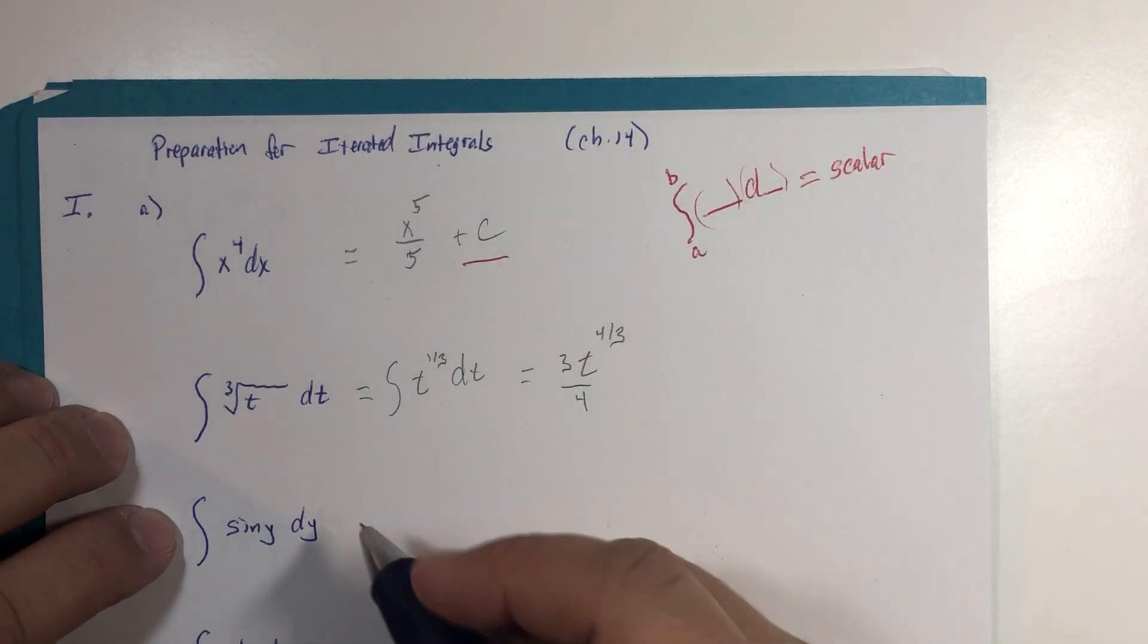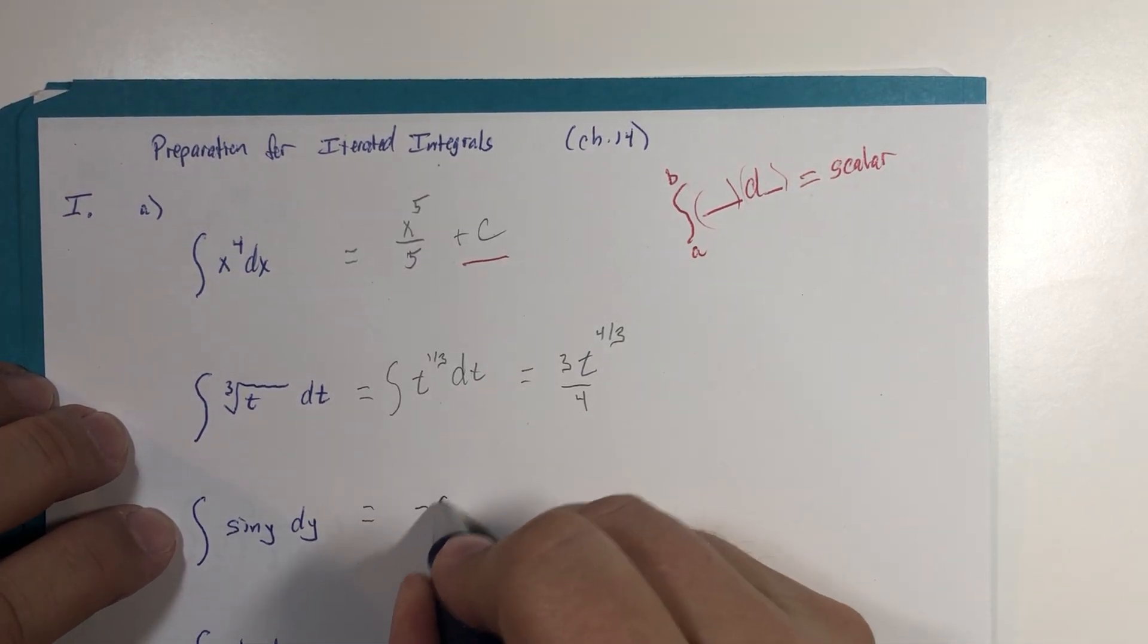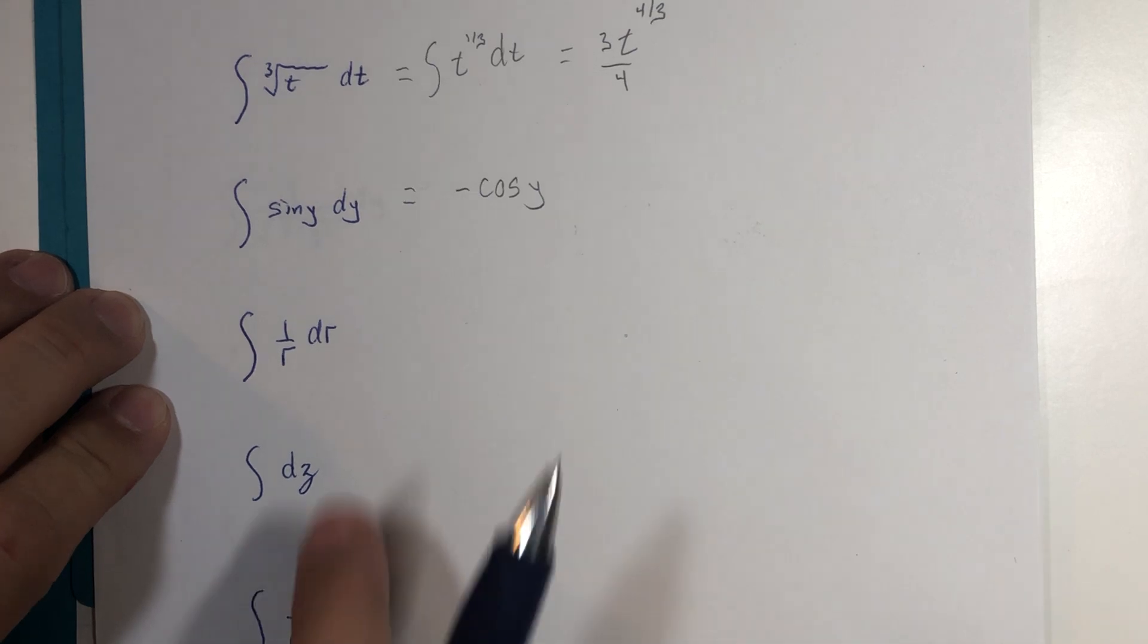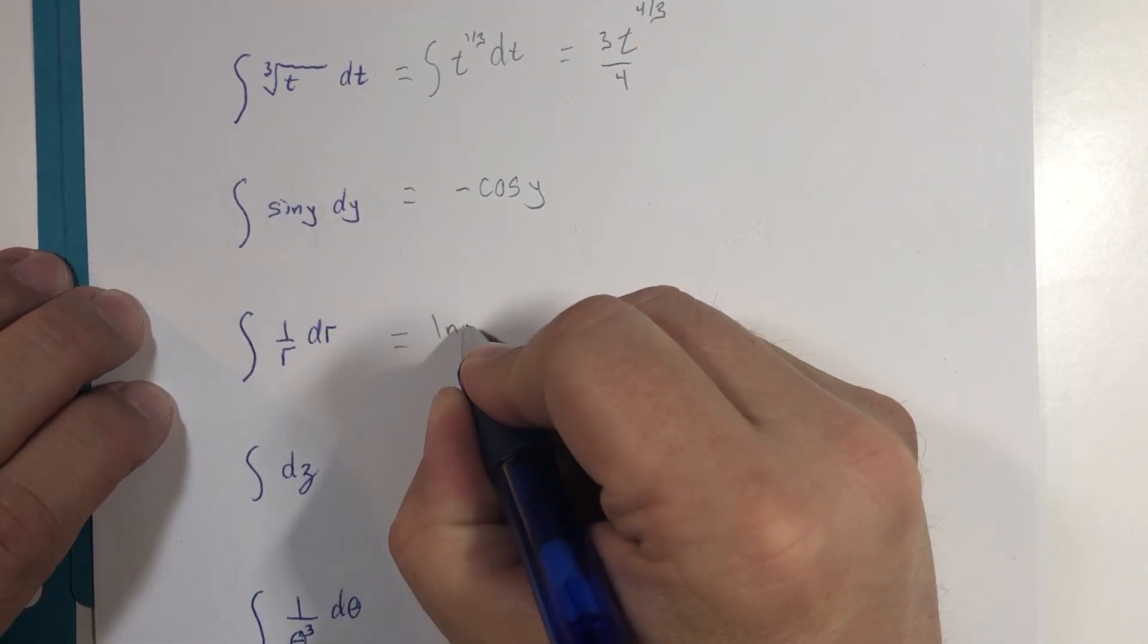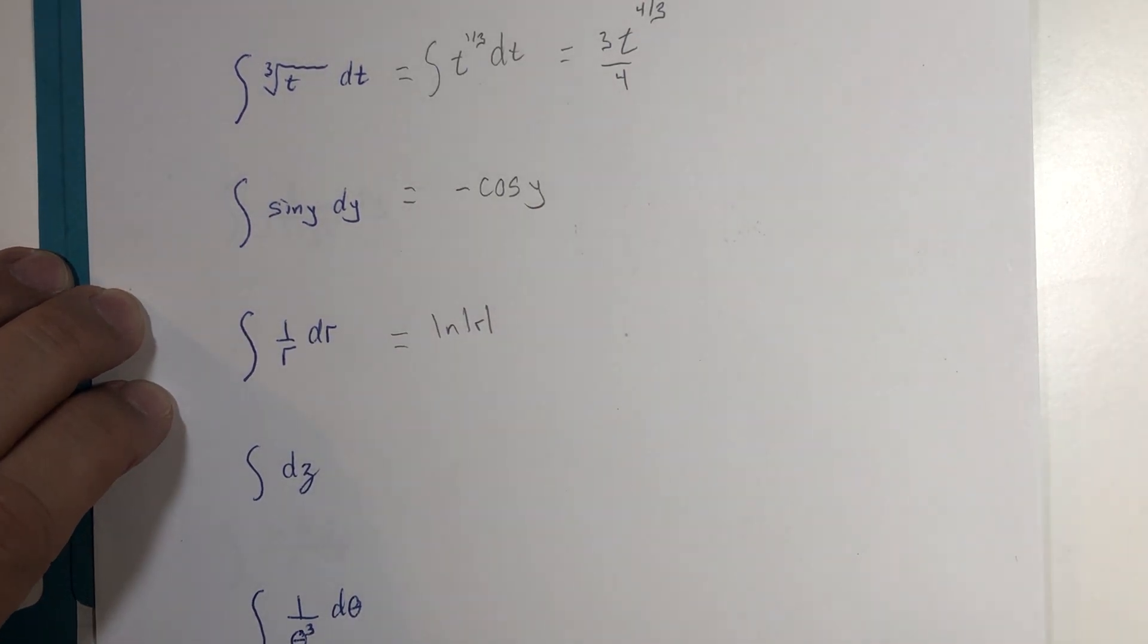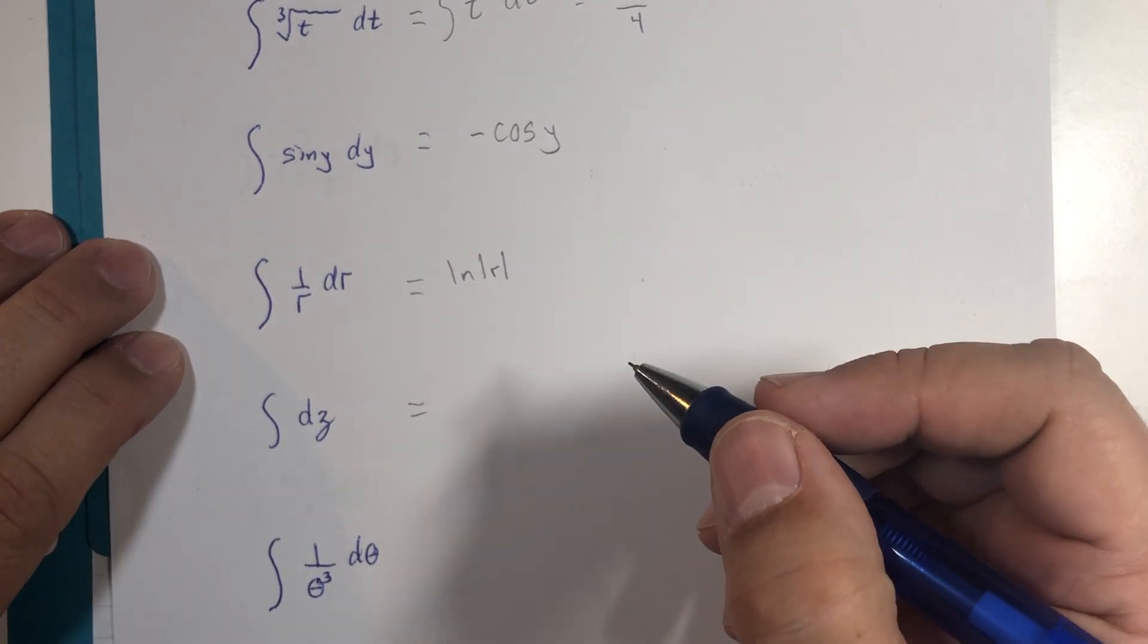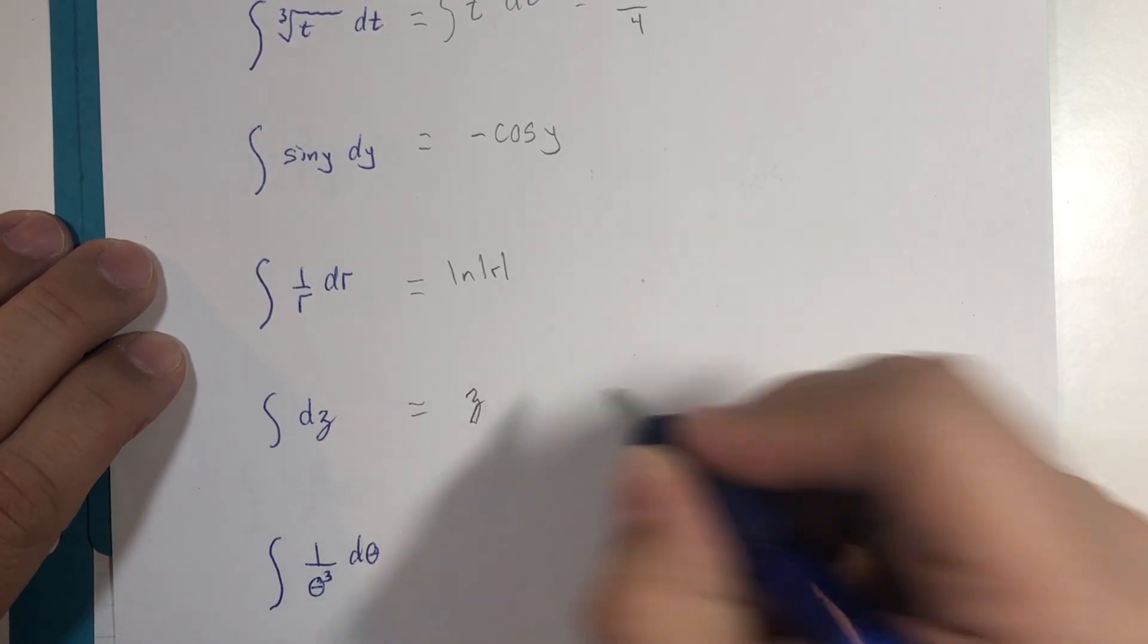Sine of y, the integral with respect to y is going to be negative cosine of y and a constant. The integral of one over r with respect to r is natural log absolute value of r and a constant. What is the integral of simply dz? Well of course, that would be z and then a constant.